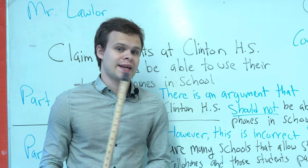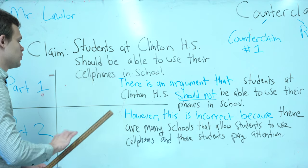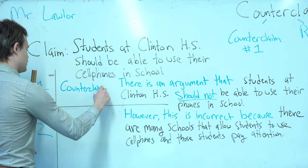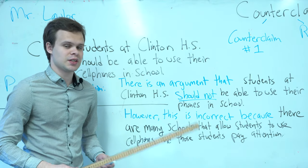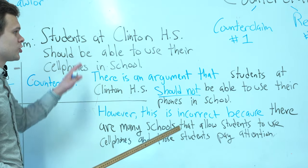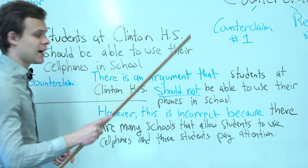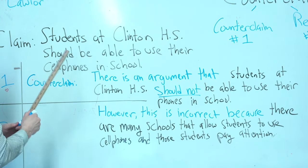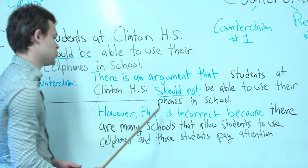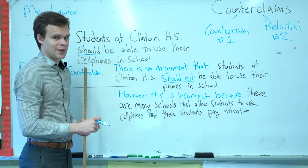The first thing you need to do is create a counterclaim — this is an argument against the claim. You can use the sentence starter 'There is an argument that...' and then rephrase the opposing view. So: 'There is an argument that students at Clinton High School should not be able to use their phones in school.' This is the counterclaim — part one is done.